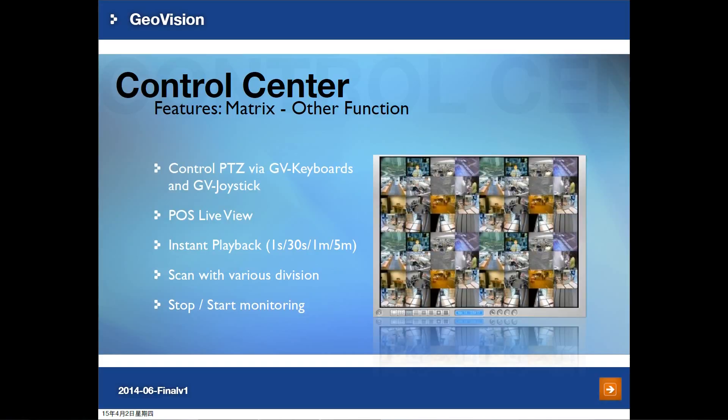There are more functions in matrix view. For live view, you can use the GV keyboard and GV joystick to control PTZ. Pause live view and you will get a pause transition overlay on the screen. For recording, you can stop and start monitoring in the matrix UI. If you want to play back events, you can also access these features through the remote view log and instant playback function icons.